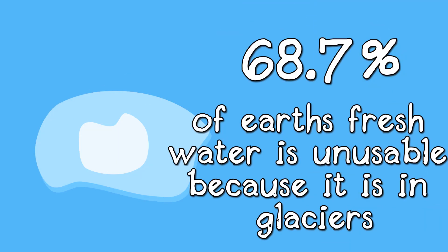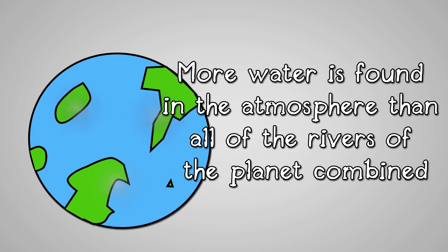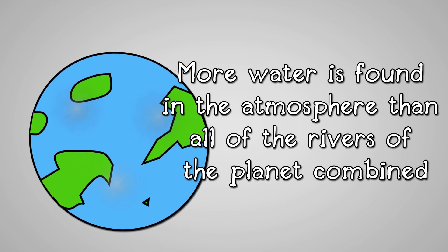68.7% of Earth's fresh water is unusable because it is in glaciers. More water is found in the atmosphere than all the rivers of the planet combined.